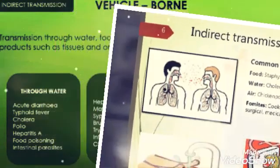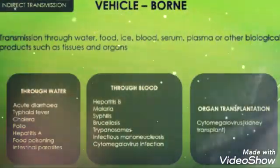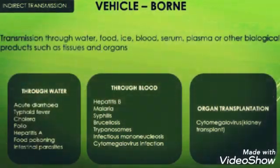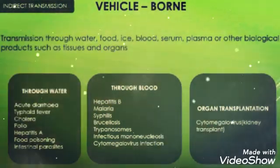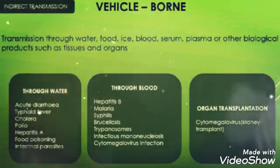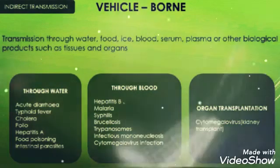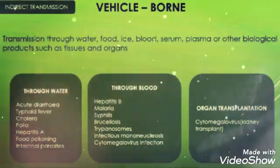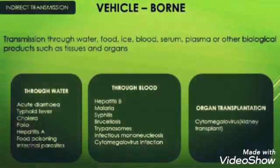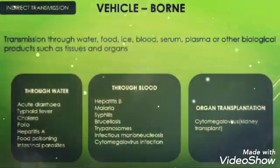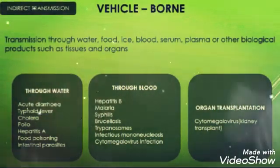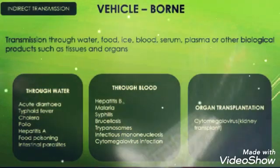Vehicle-borne transmission occurs through water, food, ice, blood, serum, plasma, or other biological products such as tissues and organs. We can mainly see this in the hospital setting, where nurses, doctors, and other health personnel get involved with those products and easily get infections from those objects. Although they are not themselves infected, when dealing with these activities they are getting disease through indirect transmission.